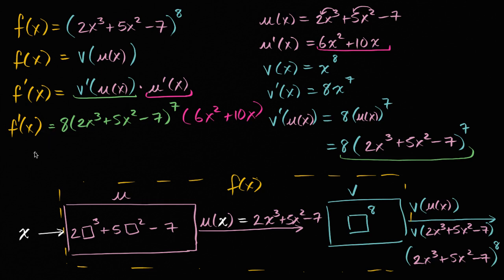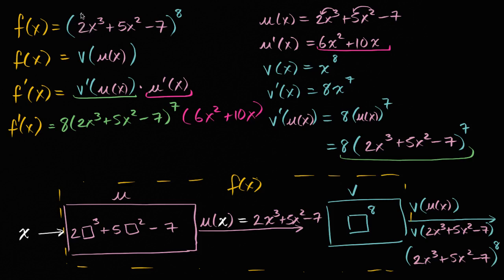Now as you get more practice with the chain rule, you'll recognize this faster and won't have to write all of this down. You'll say: take the derivative of the outside function with respect to what's on the inside. So if I was taking the derivative of x to the eighth, it would be eight x to the seventh. But taking the derivative with respect to the inside, where I had x's before I now have u of x, so it's eight times this to the seventh power, and I multiply that times the derivative of the inside, which is six x squared plus ten x.